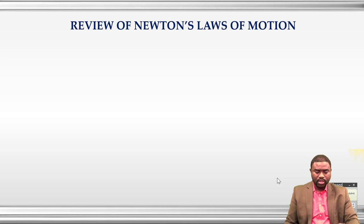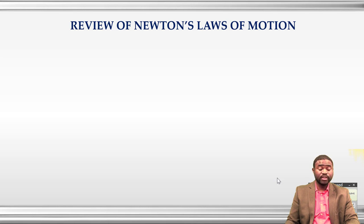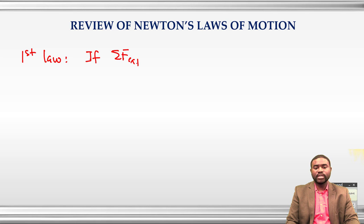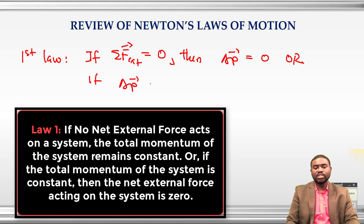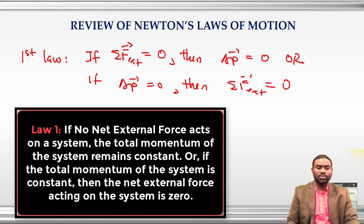We are looking at the applications of Newton's laws of motion, and there are three of them. The first law basically tells us that if the net external forces acting on a system is zero, then the change in the momentum of the system will also be zero. Another way to put this is if there is no change in the momentum of a system, then the net external force will be equal to zero.